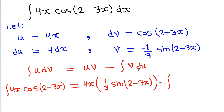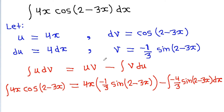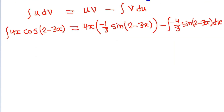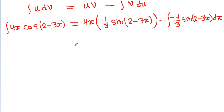If we multiply v and du, we get minus 4 by 3 times sin(2-3x) dx. Note that in the integration by parts formula, we don't need to put any constant term when integrating dv.